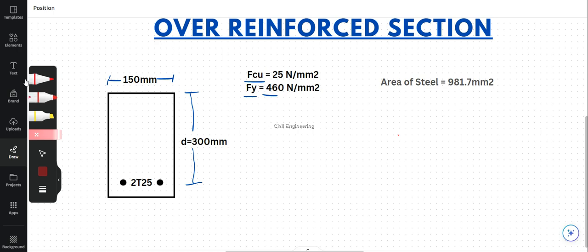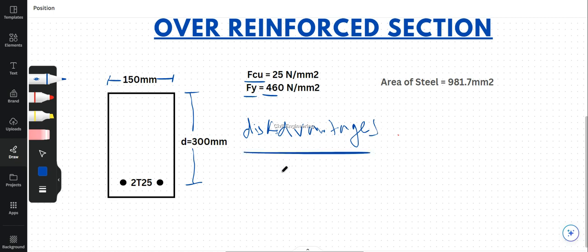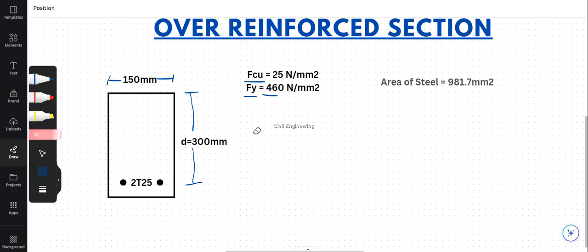There are a few disadvantages of over-reinforced sections. First, we waste cost on reinforcement — we have supplied more reinforcement than is needed. Second, it is not well-designed, meaning we have not properly considered the required amount of reinforcement.